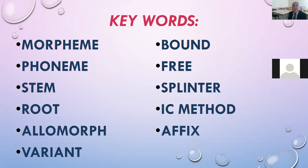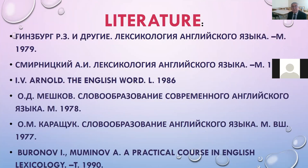Keywords include morpheme, phoneme, stem, root, allomorph, variant, bound, free, splinter, IC method, and ethics. Use literature on this lecture: Ginzburg's book, Smirnitsky's Lexicology of the English Language, Arnold's The English Word, Meshkov's Word Formation in Modern English, and other relevant sources.